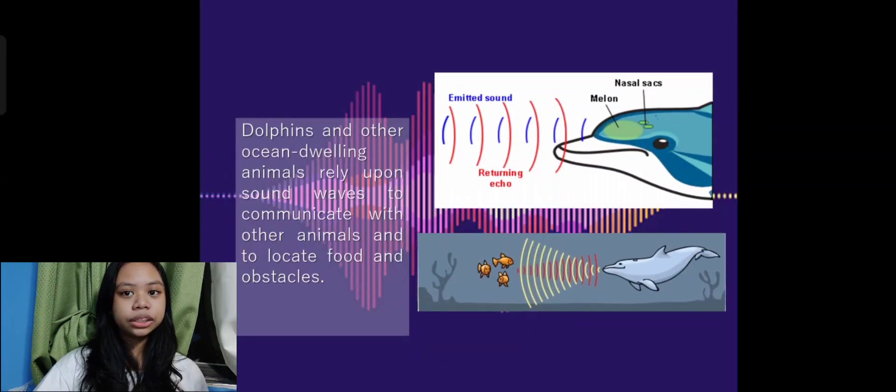Dolphins and other ocean-dwelling animals rely upon sound waves to communicate with other animals and to locate food and obstacles. The reason that they are able to effectively use this method of communicating over long distances is that sound travels so much faster in water.